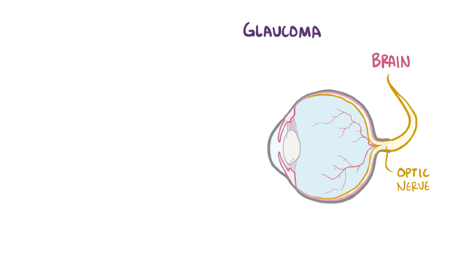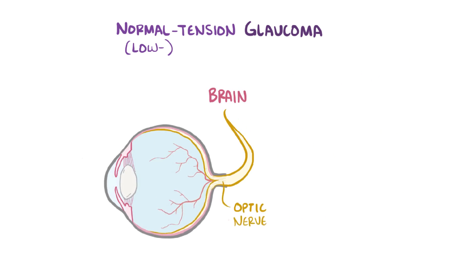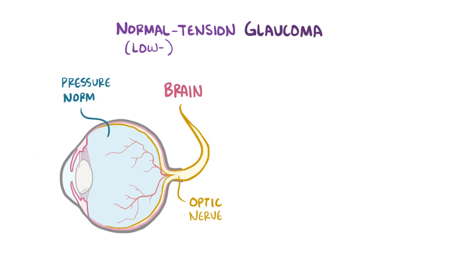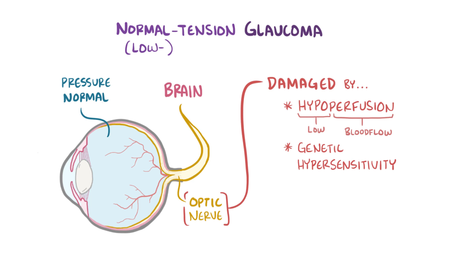Finally, normal tension glaucoma or low tension glaucoma happens when the pressure is normal in the eye. The cause of normal tension glaucoma is largely unknown, although it's thought that the optic nerve becomes damaged due to hypoperfusion or poor blood flow, as well as potentially genetic hypersensitivity to pressures that are even in the normal range.